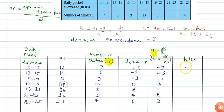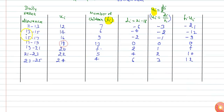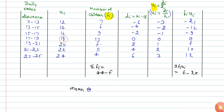The Fi·ui products are: 7 times minus 3 is minus 21, 6 times minus 2 is minus 12, 9 times minus 1 is minus 9, 13 times 0 is 0, f times 1 is f, 5 times 2 is 10, and 4 times 3 is 12. Now I can calculate the summation of Fi and summation of Fi·ui. Summation of Fi will be 44 plus f, and summation of Fi·ui is f minus 20.